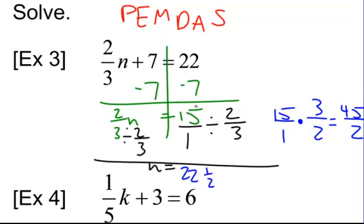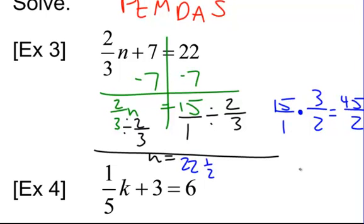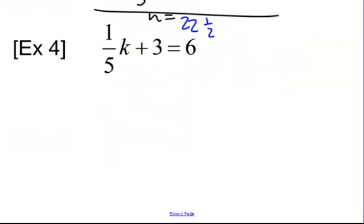Alright, so try number 4 on your own. Okay, welcome back. Here we have 1 fifth k plus 3 equals 6. Again, let's undo that order of operations. So let's first subtract 3 from both sides.